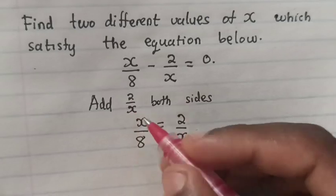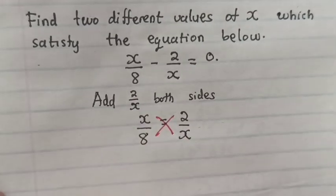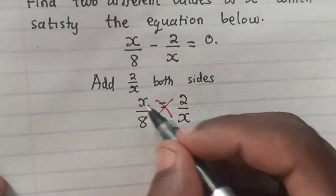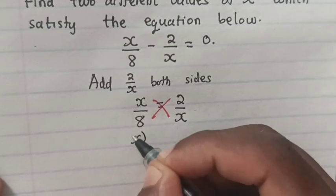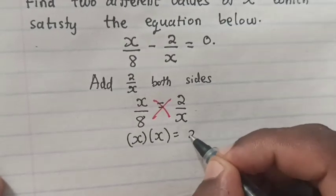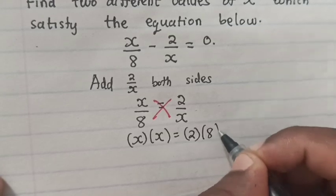And then here we cross multiply, so it will be x times x is equal to 2 times 8.